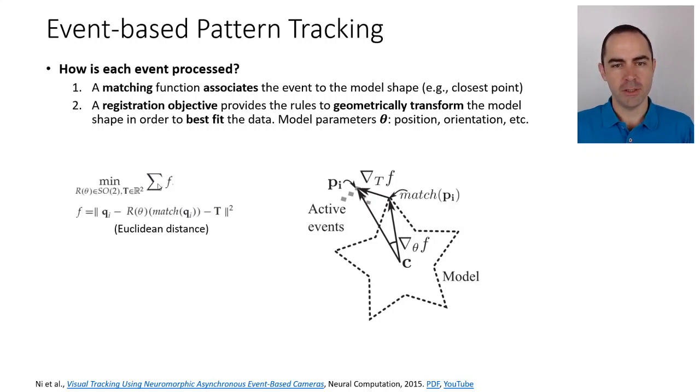In this case, we are minimizing the Euclidean distance between the two point sets, represented here. We are minimizing over some parameter space a sum of Euclidean distances between the events considered and the model shape. This match(qi) is a point on the model, and we are rotating it and translating it to compare it to qi, which is the event. Pi is just the event but subtracted by the center, so it's with respect to the center of the model.